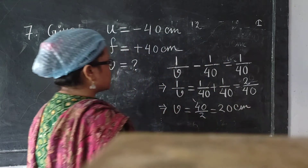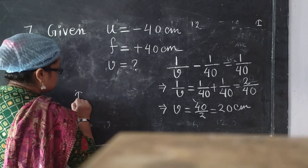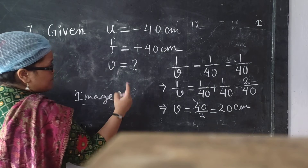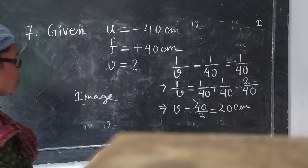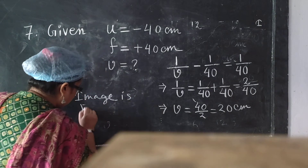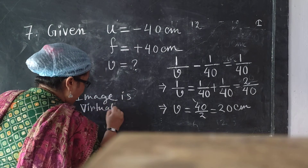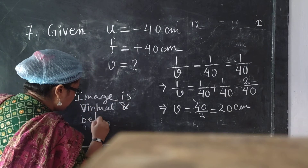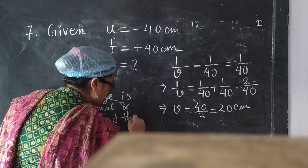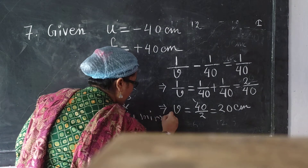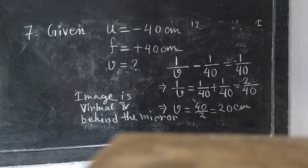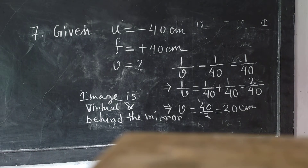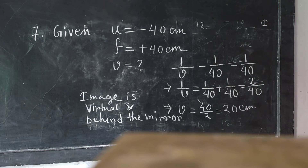V equals 40/2, that is equal to 20 cm. Plus 20 means the image is a virtual image. The image is virtual and formed behind the mirror. So the answer is: the image is formed behind the mirror at a distance of 20 cm. As you know, this is a convex mirror, so a virtual image is formed.